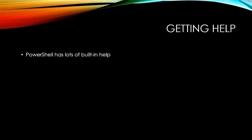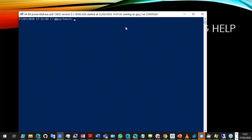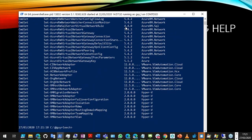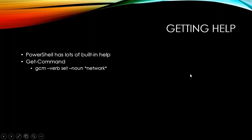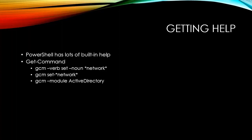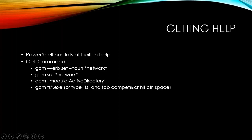A couple more cmdlets to help you find things. There are thousands of cmdlets — which ones will help me? Get-Command (gcm) — for example, verb Set, noun Network — shows all the Set-Network commands. Or just searching noun Network shows 50 results. I can also see all commands in a particular module: Get-Command -Module ActiveDirectory tells me everything that module provides. I can filter by verb Set, or by wildcard like *user*, or it will also find executables.